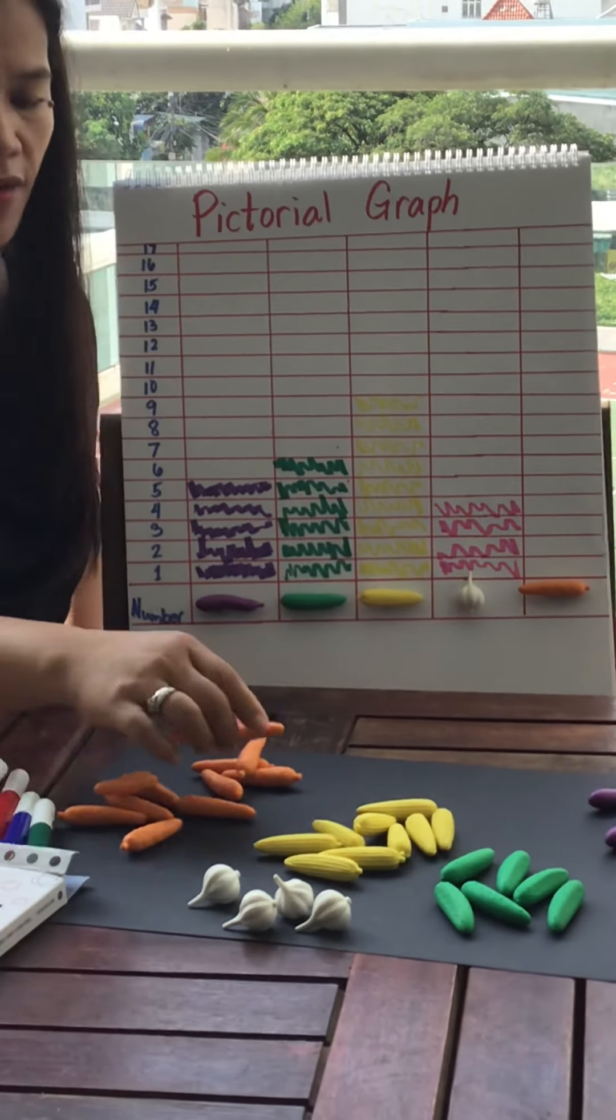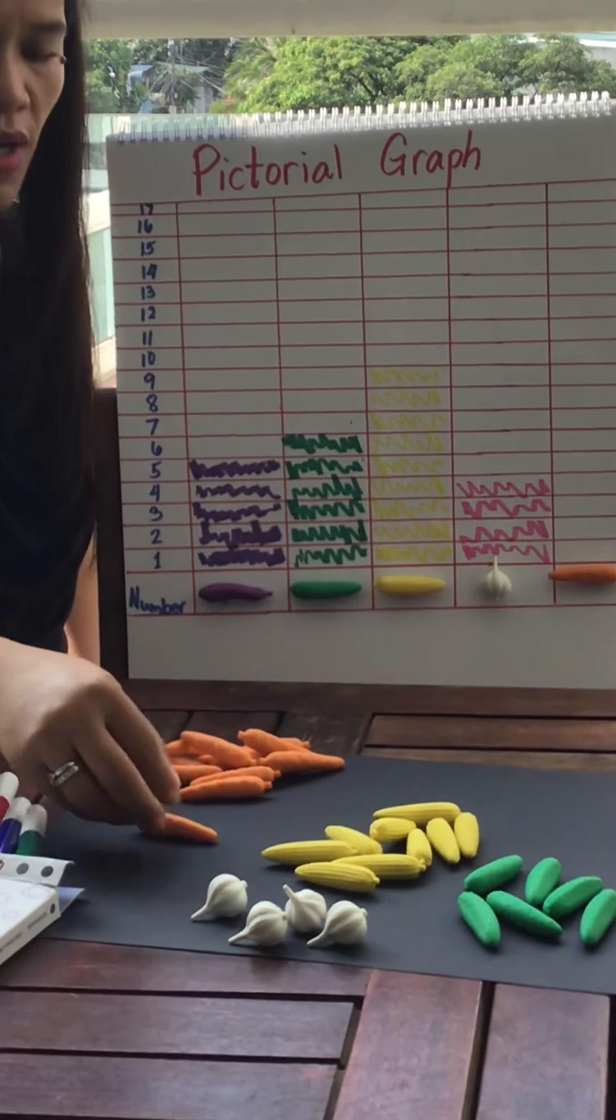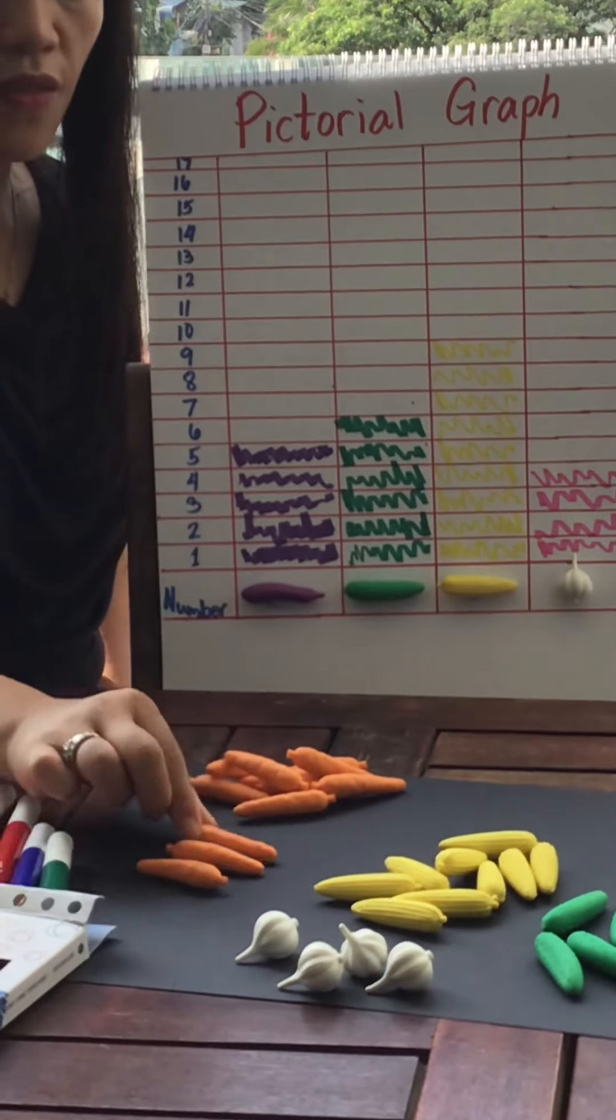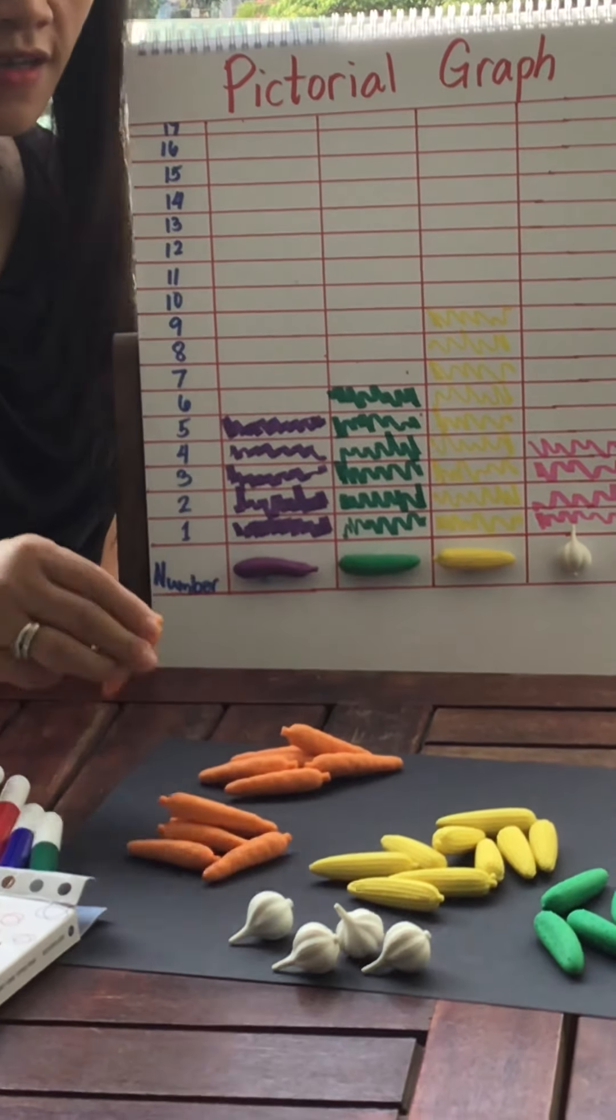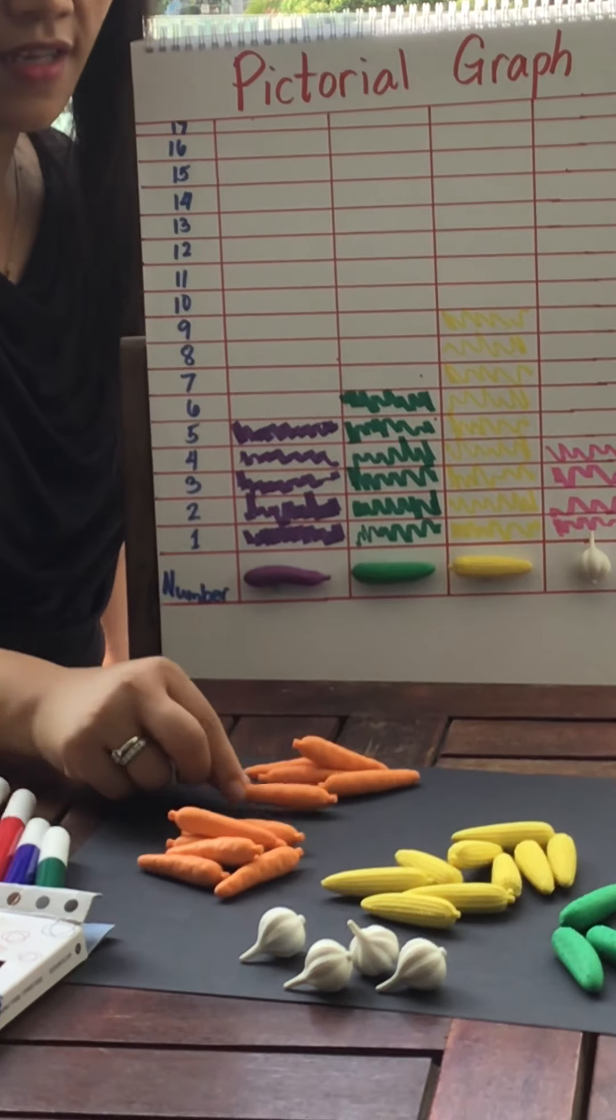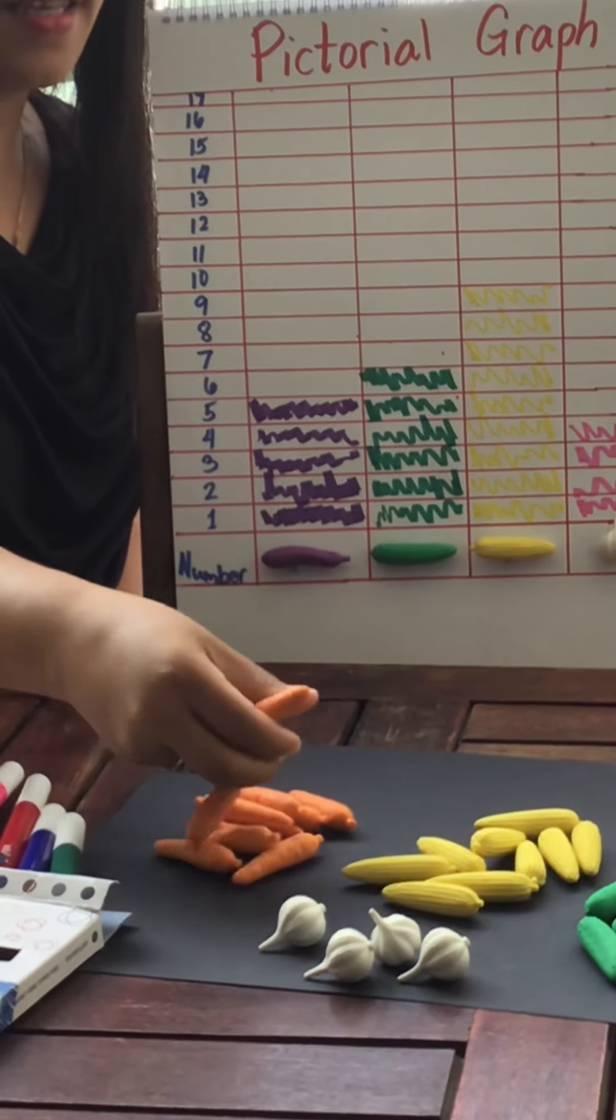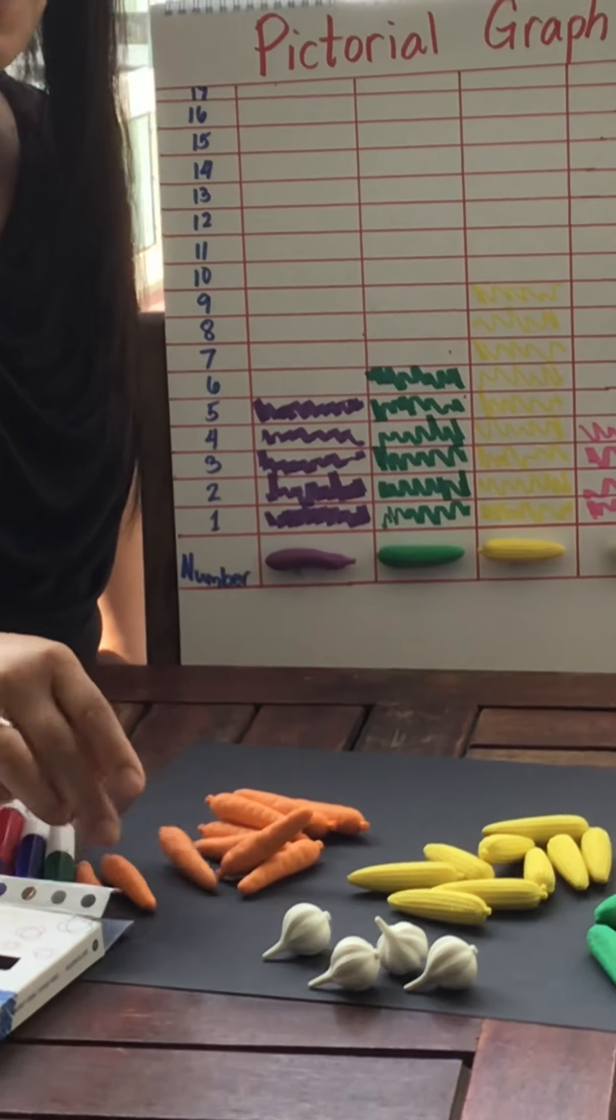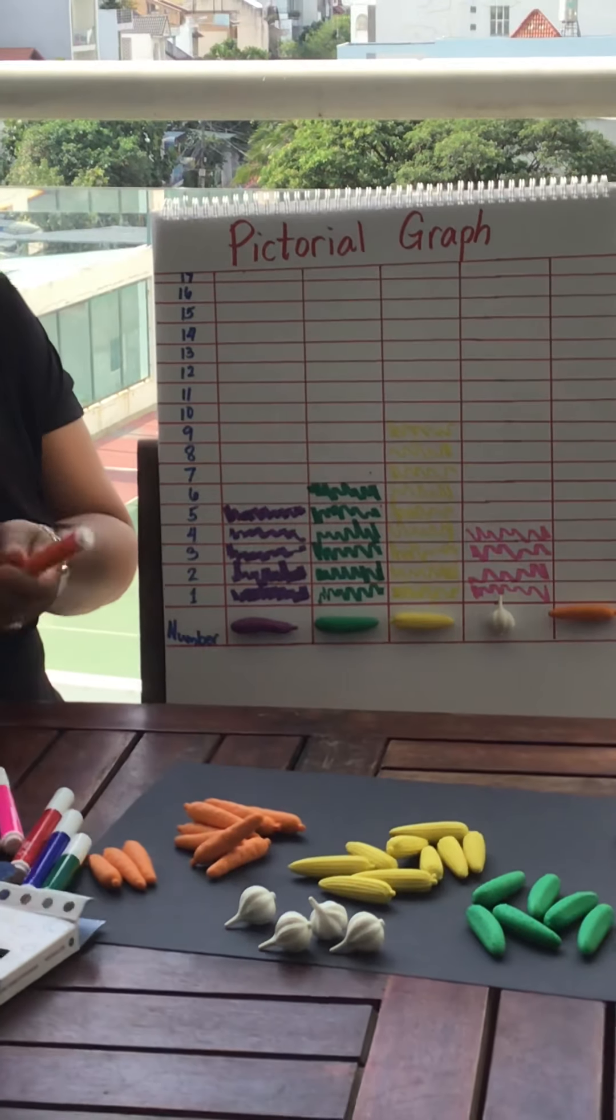And now the carrots. How many carrots are here? Let's count. One, two, three, four, five, six, seven, eight, nine, ten, eleven, twelve carrots. So there are twelve carrots.